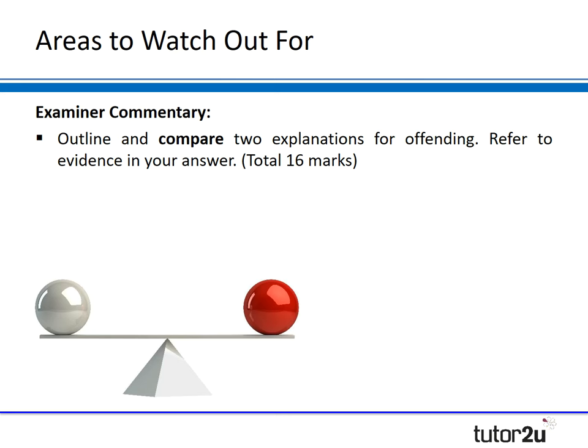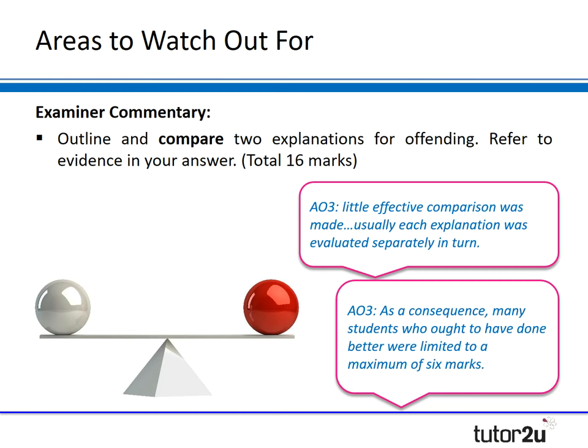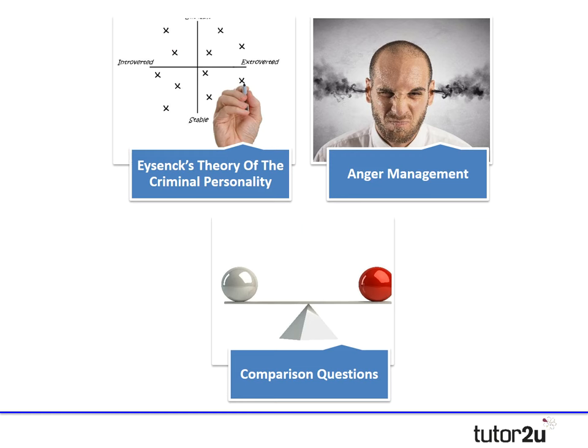The third topic involves a trickier essay: 'Outline and compare two explanations of offending and refer to evidence in your answer.' The issue was that word 'compare.' The examiner said little effective comparisons were made — usually each explanation was just evaluated separately in turn, with no links to comparison. As a consequence, many students who ought to have done better were limited to a maximum of six marks in the old specification, which would be even fewer in the new specification.